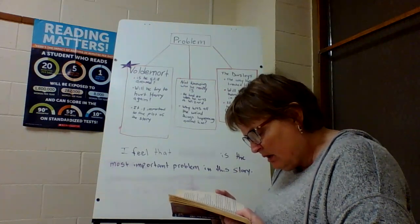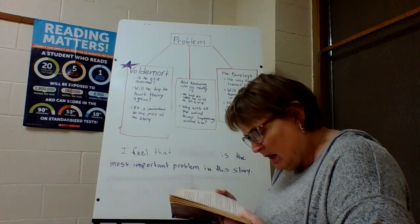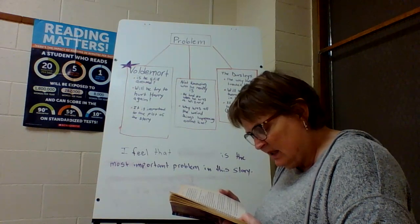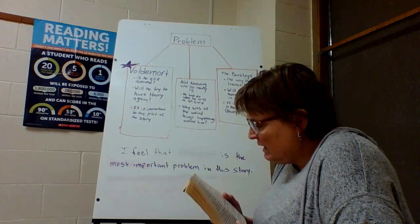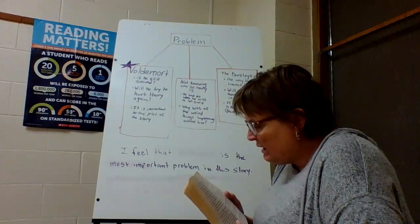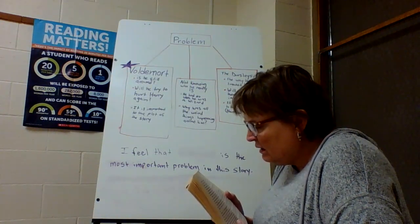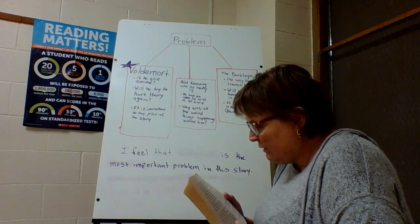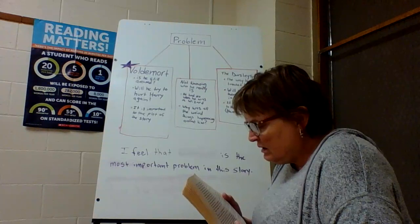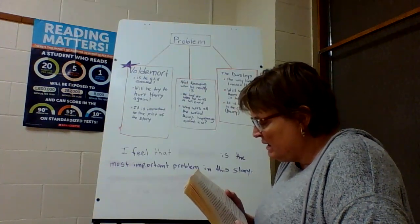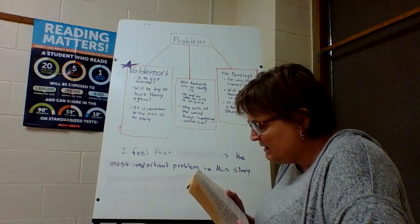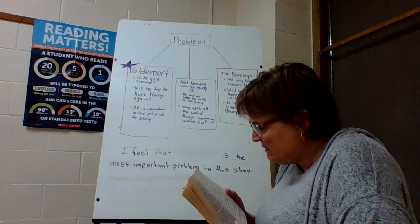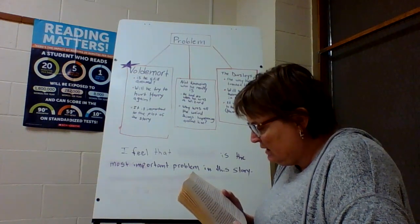Harry took the wand. He felt a sudden warmth in his fingers. He raised the wand above his head and brought it swishing down through the dusty air, and a stream of red and gold sparks shot from the end like fireworks, throwing dancing spots of light onto the walls. Hagrid whooped and clapped, and Ollivander cried, 'Oh, bravo! Yes, indeed — oh, very good! Well, well, well. How curious. How very curious.' He put Harry's wand back into its box and wrapped it in brown paper, still muttering, 'Curious, curious.' 'Sorry,' said Harry, 'but what's curious?' Mr. Ollivander fixed Harry with his pale stare. 'I remember every wand I've ever sold, Mr. Potter. Every single wand.'